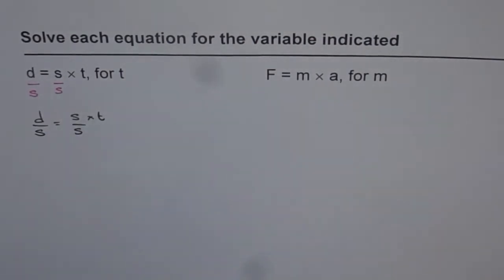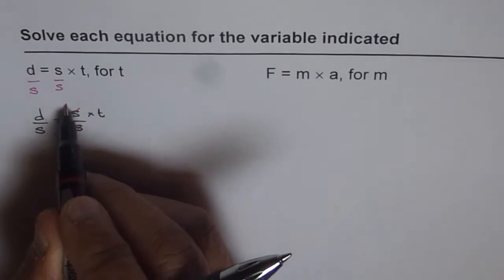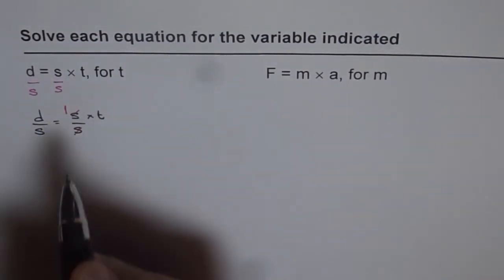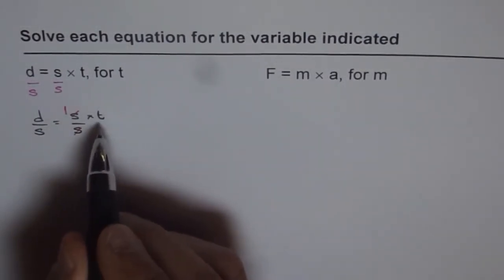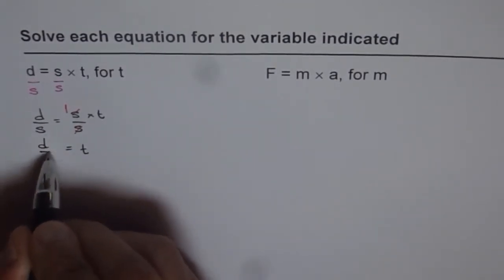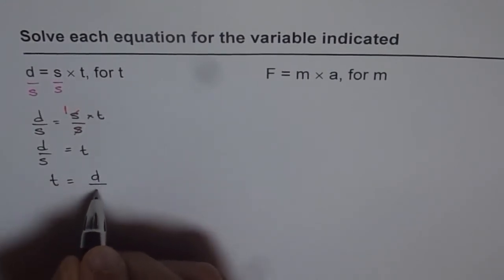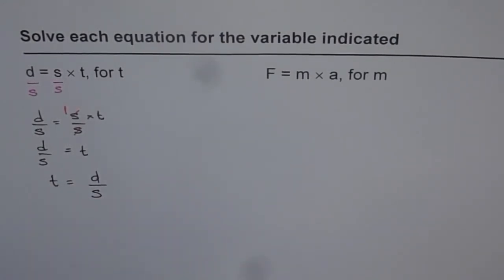Now as soon as we do it then we can cancel s from the right side. S divided by s is 1, and anything times 1 is the variable itself. So t times 1 is t. We get t equals d over s. And so we can write this as time t equals distance over speed. So that is how we can isolate t from this equation.